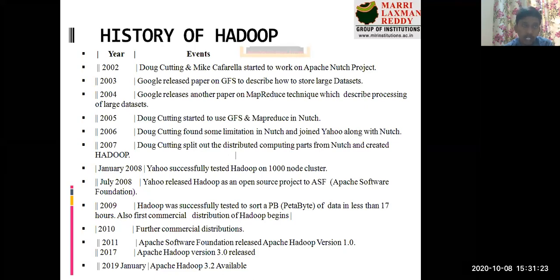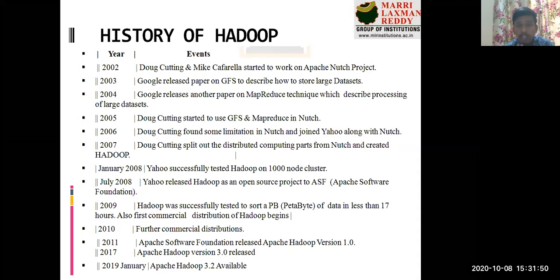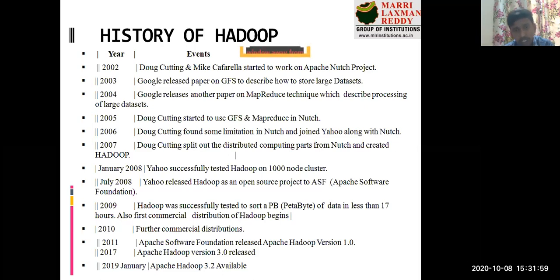This work started in 2002. In 2003, Google released a paper on the Google File System, describing how to store large datasets in a distributed manner. Google invested in different file systems because not much equipment was available in industry at that time. This was very useful for understanding distributed data storage.